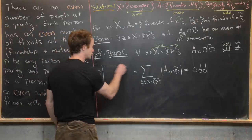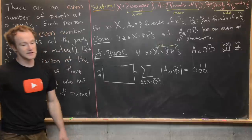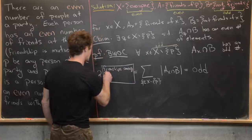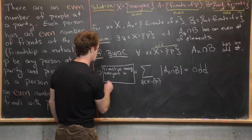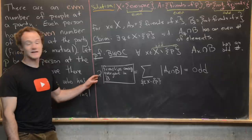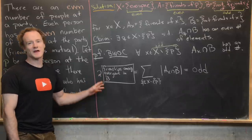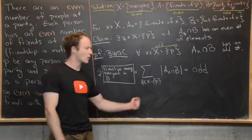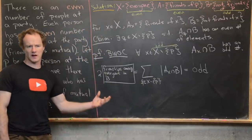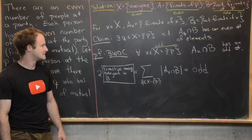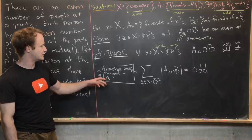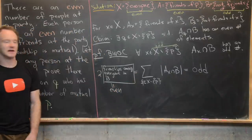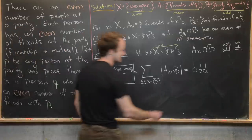But due to the mutuality of friendship, this sum is actually equal to twice the number of friendships among everyone in the set B. There's a factor of two because each friendship is counted twice. So this quantity is even. We have an even number equal to an odd number — a contradiction. This proves the claim.